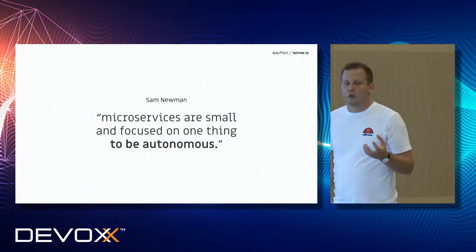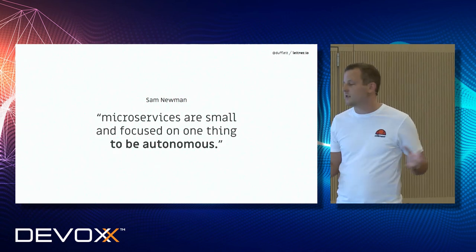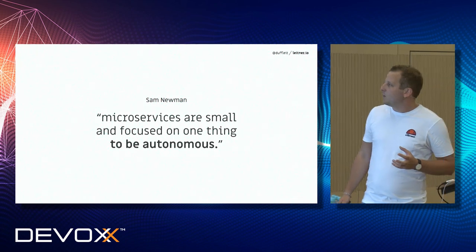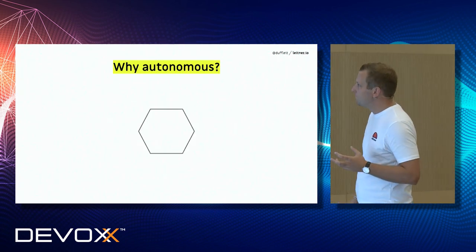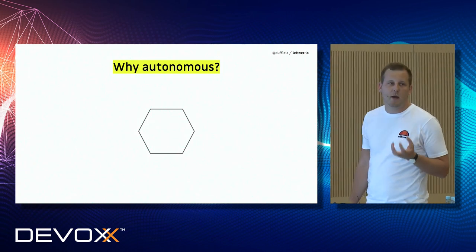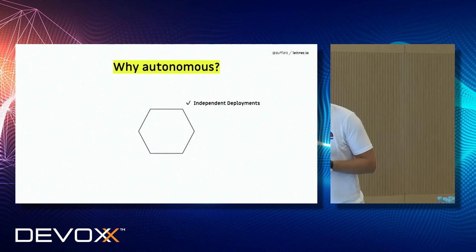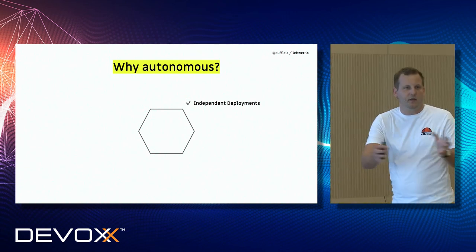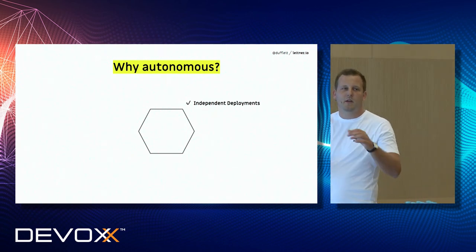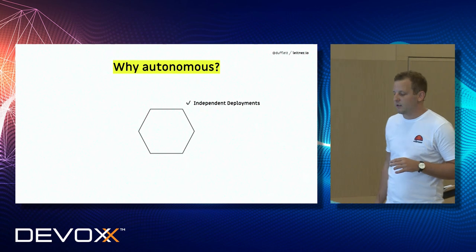Why do we want to be autonomous? There are roughly six reasons. The first reason is that we want independent deployments — that's the obvious one. We build independent services because we want to ship them, deploy them independently. We have independent life cycles and lifetimes in our microservice architecture.